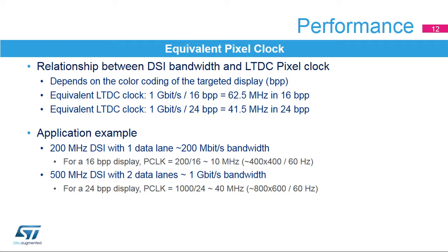As an example, when using two lanes at 500 megabits per second for a total of 1 gigabit per second, we have a maximum equivalent pixel clock of 62.5 MHz for 16-bit per pixel coding and 41.5 MHz for 24-bit per pixel coding. In terms of application examples, we can have a small 400x400 pixel display running on a single 200 Mbps lane at 16 bits per pixel, or a large 800x600 pixel display at 24 bits per pixel running on both data lanes at 500 Mbps each.